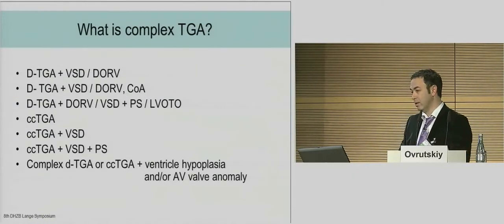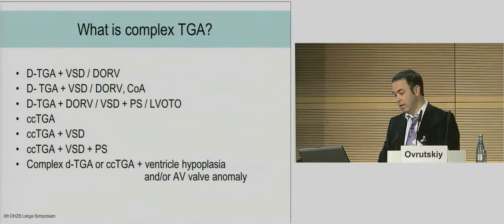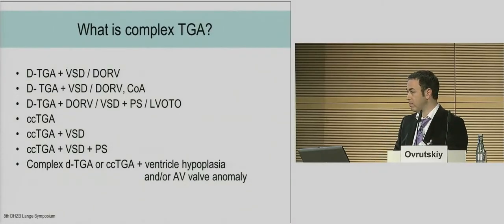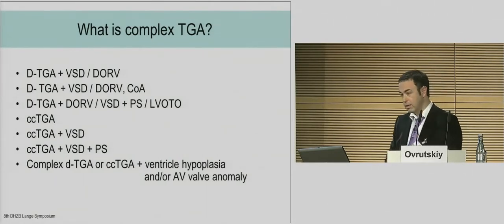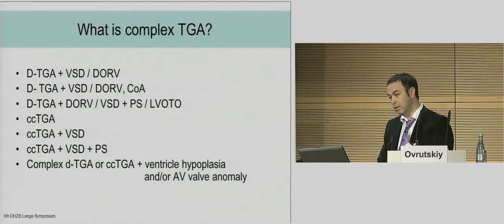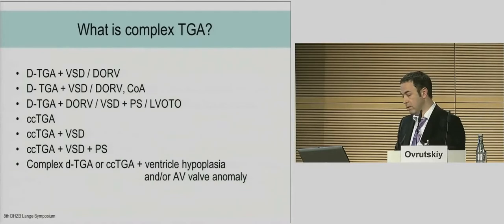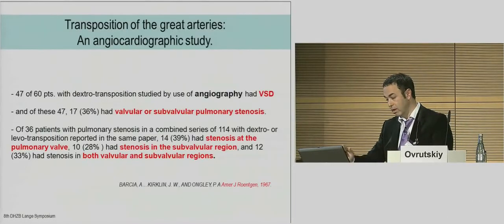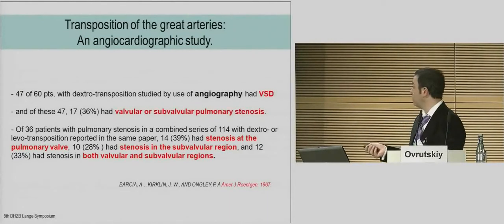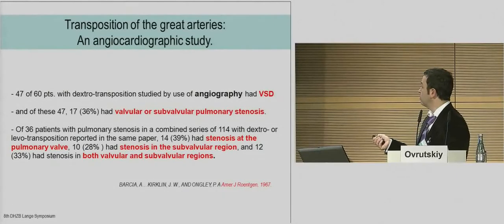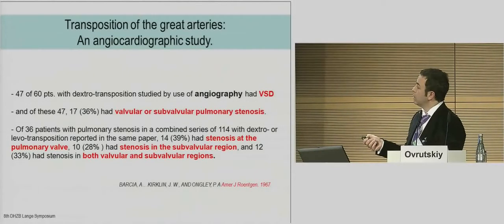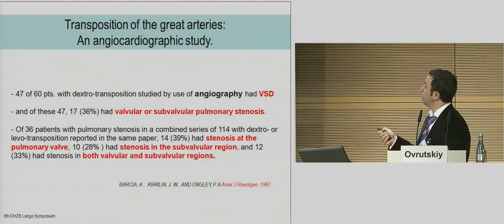What is a complex TGA? We discussed it previously and today. We have different forms of complex TGA: dextra TGA and congenitally corrected transposition with VSD, or with obstruction of the left ventricular outflow tract, or both, and also with ventricular hypoplasia or arterioventricular valve anomaly. In a study published in 1976 in the American Journal, 47 of 60 patients were investigated by angiography; they had VSD, and 36% had subpulmonary syndrome.